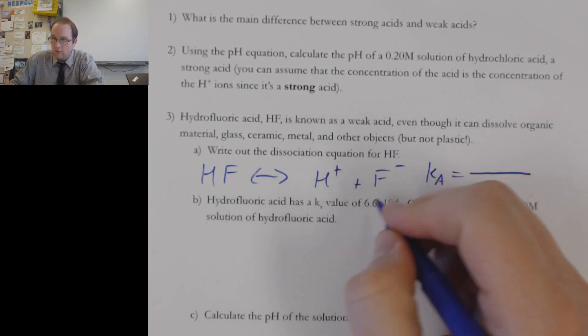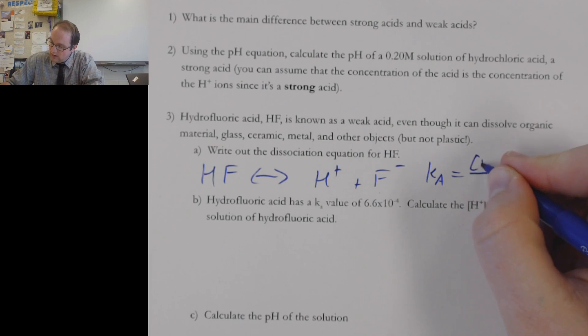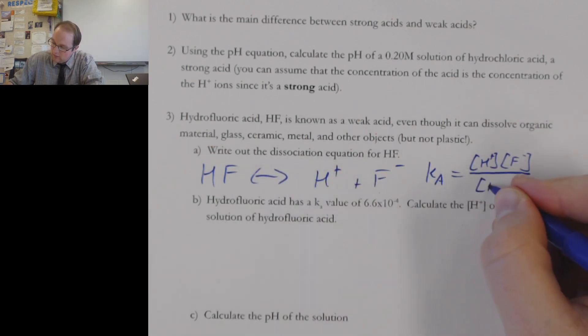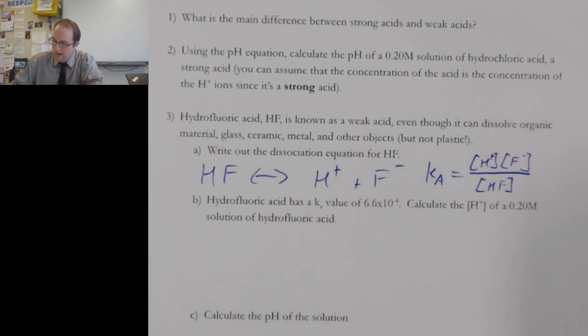for this type of problem. I'm going to have Ka is going to be equal to, again, we're going to do products over reactants. So I'm going to do my H plus concentration times the F minus concentration over the original acid's concentration, the HF.